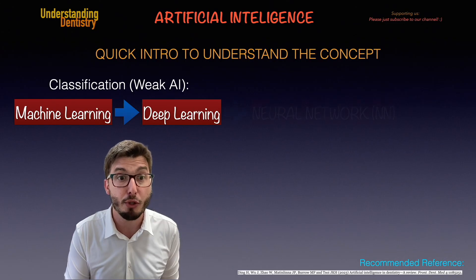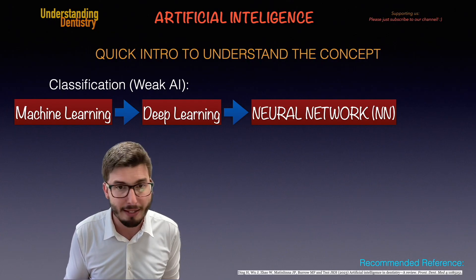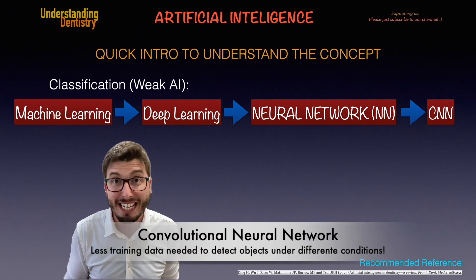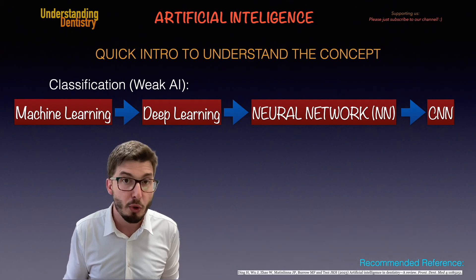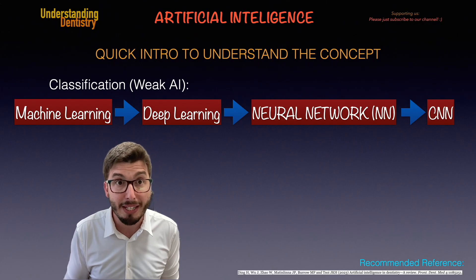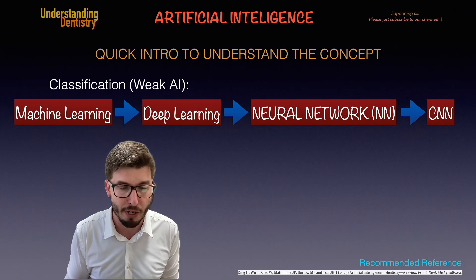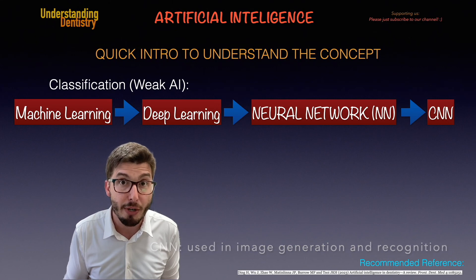Deep learning further developed into neural networks, which allow us to extract features from images, such as detection of objects. The neural network was also further developed into convolutional neural networks (CNN), which require less training data for the software to recognize and detect objects on images. AI methods in dentistry need to be fed with large amounts of data and databases, which is important for the software to understand what needs to be recognized — mainly used in image generation and recognition.